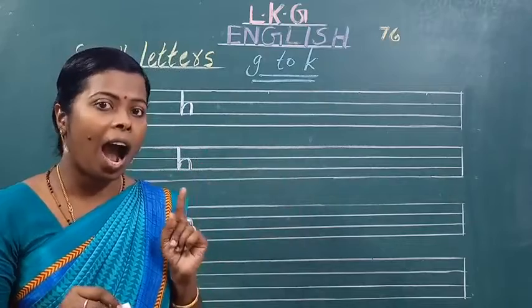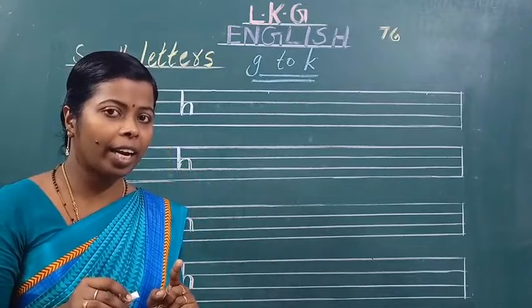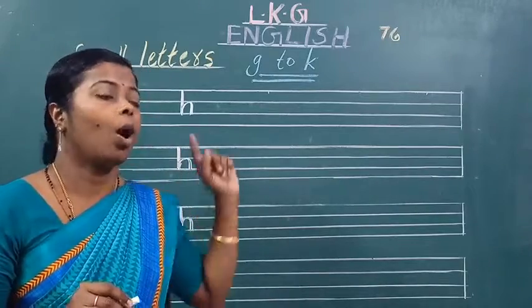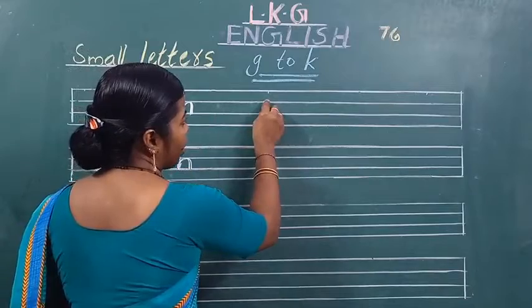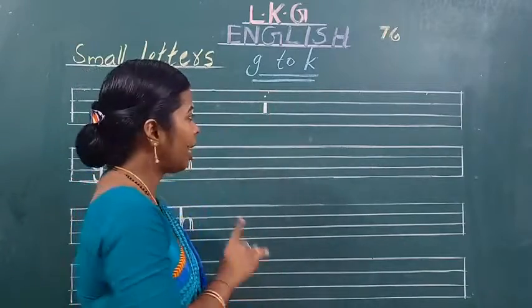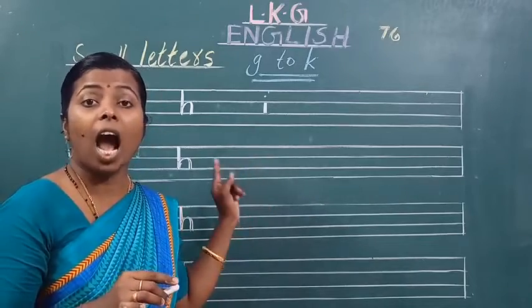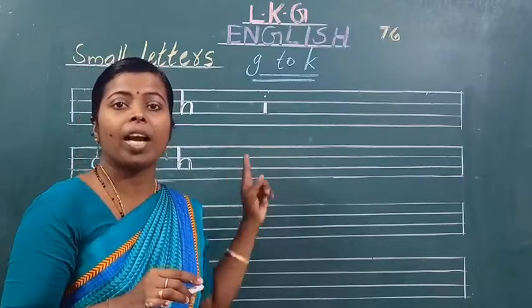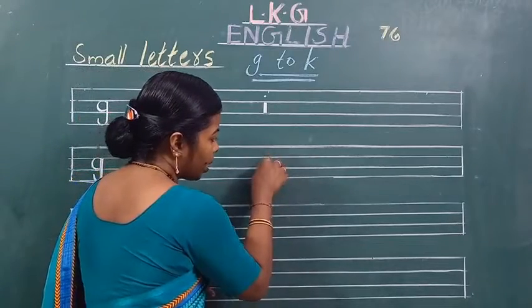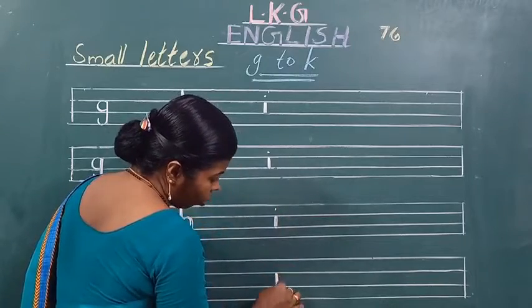Aai. Okay aai, aai kaisa likhna hai — chota sa standing line banana, then one dot lagana. Dot kahaan lagana hai? Upar. Very good — ek chota sa standing line banali, phir kya karna, idar ek dot lagana hai. What is this? Which letter is this? This is small letter I. Okay students, likhho, miss ke saath aap ko bhi likhna hai. Okay, this is small letter I.